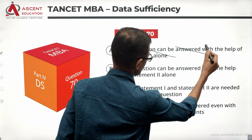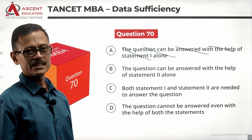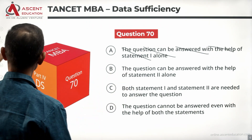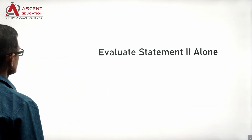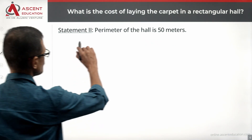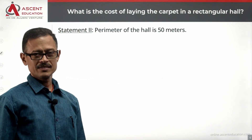We eliminate answer option A. The answer will be one of B, C, or D. Now let's look at Statement 2 alone: the perimeter of the hall is 50 meters.